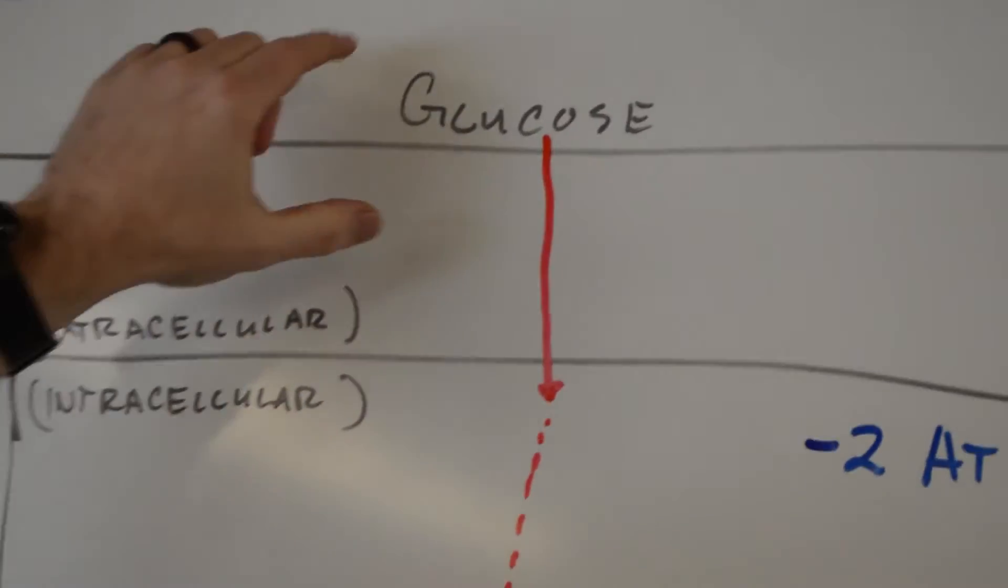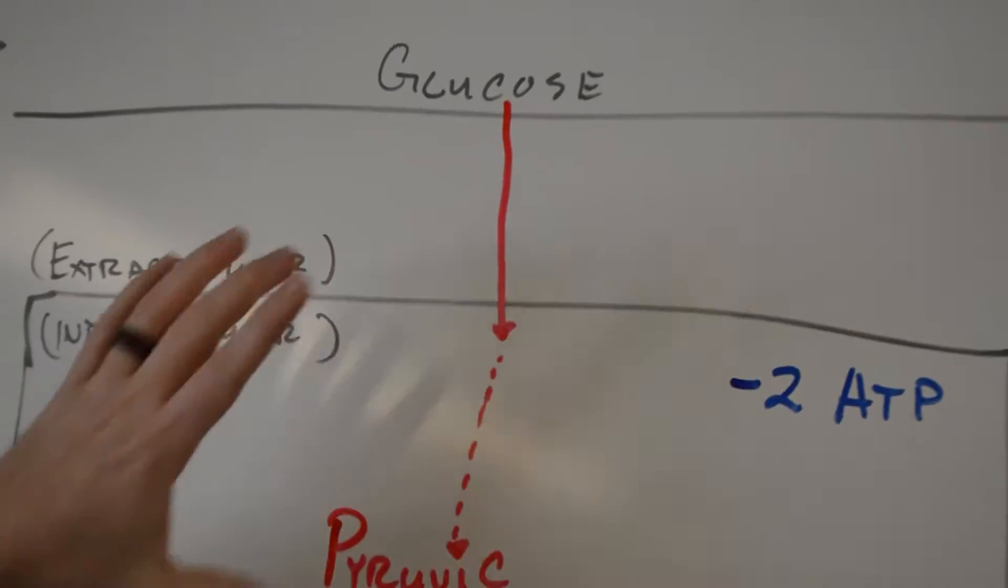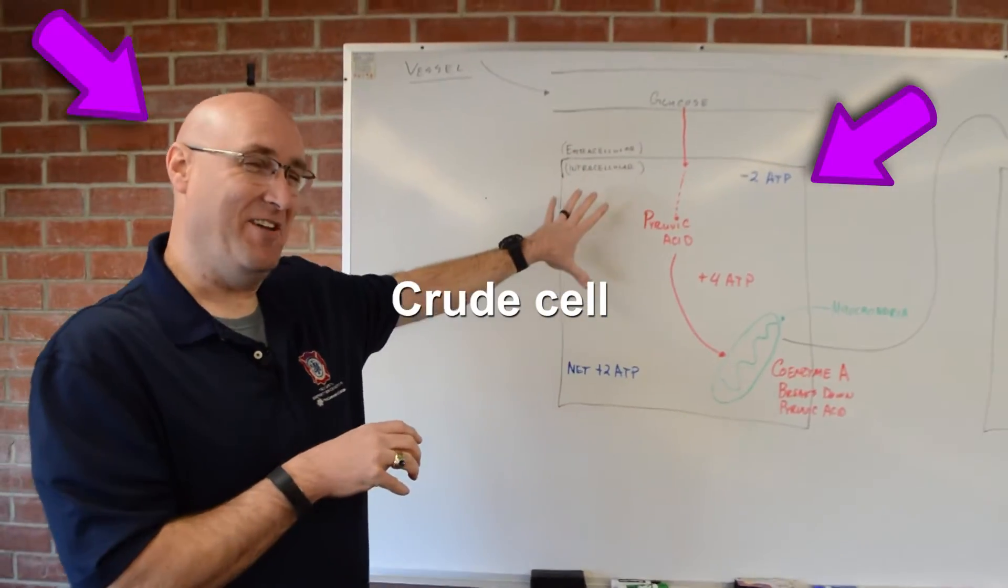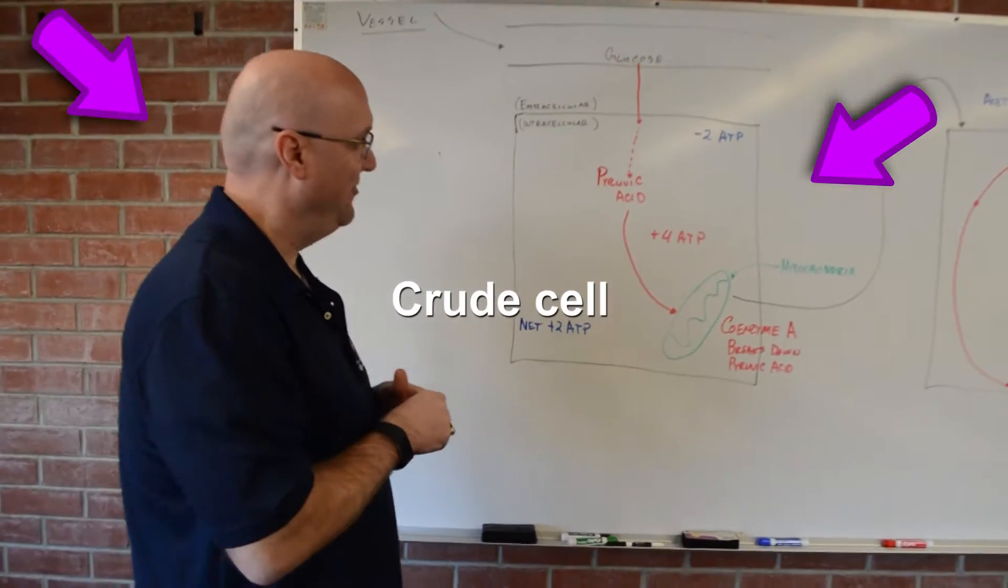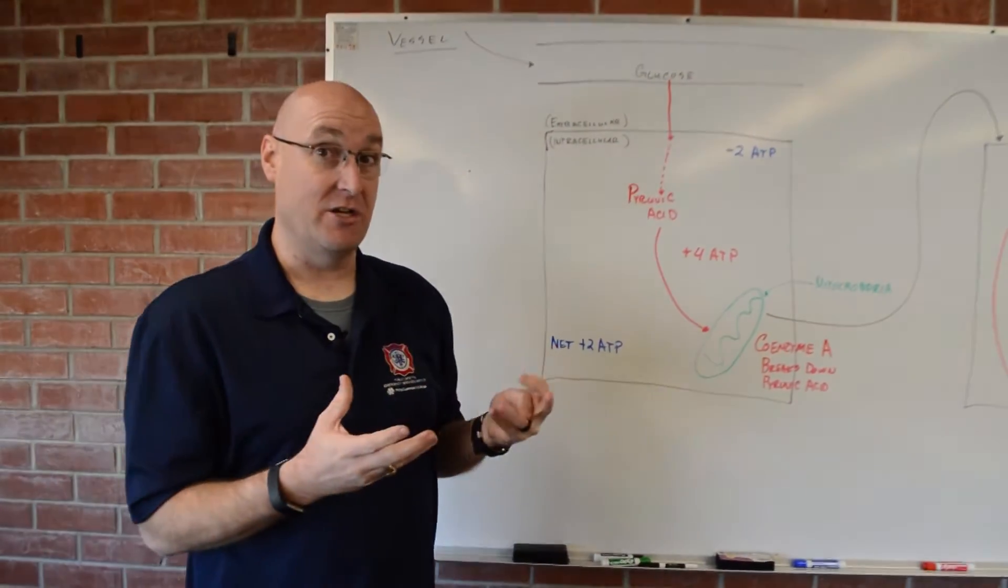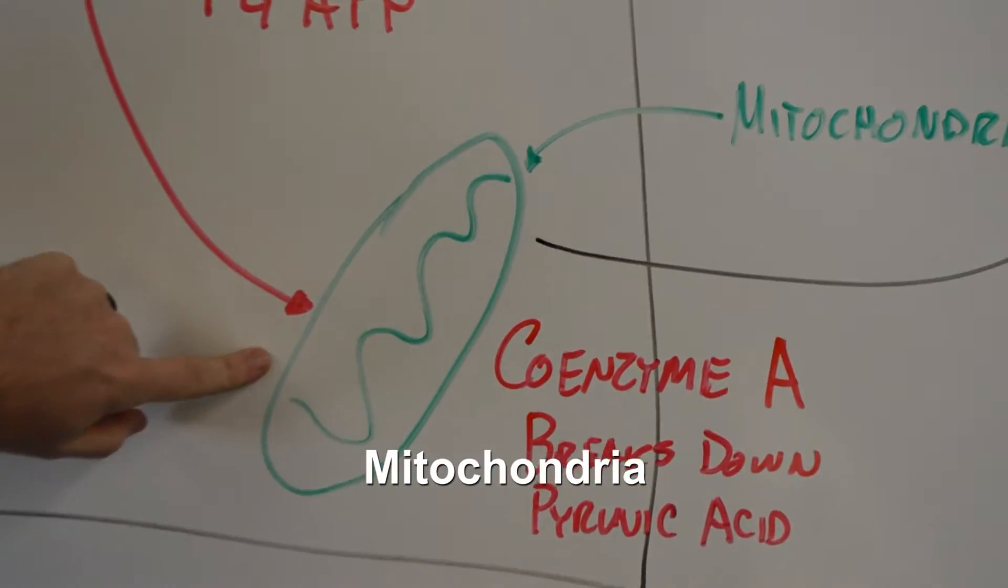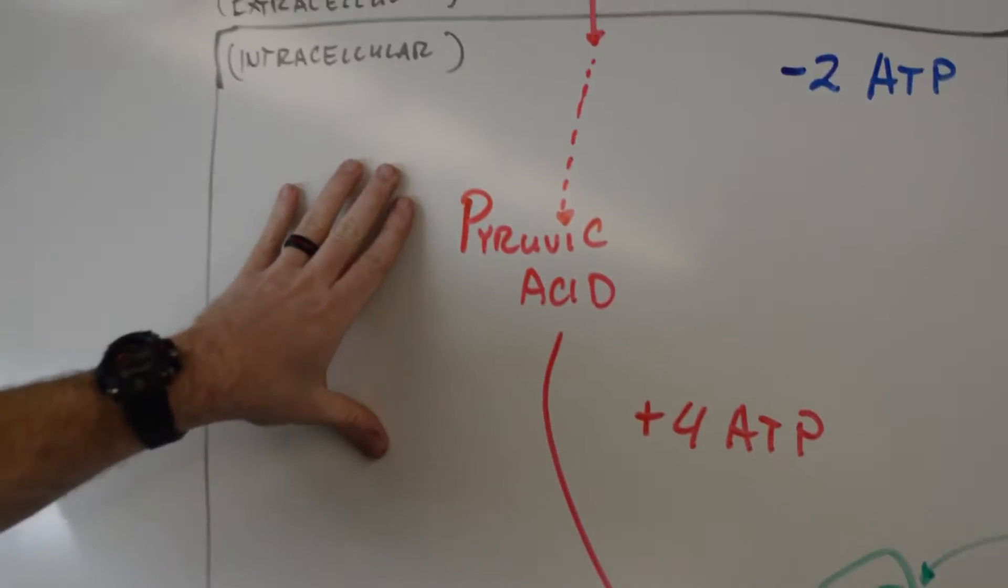So we have glucose in our vessel, and so we have an extracellular space, intracellular space. And so this is my crude representation of what the cell looks like. Most of the energy production that occurs in our body occurs in our mitochondria, but it first starts in the cytosol, the cytoplasm within the cell.